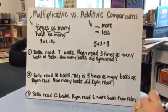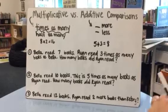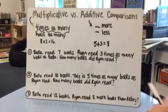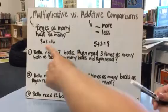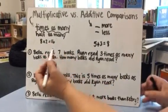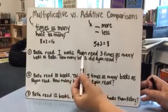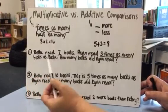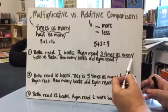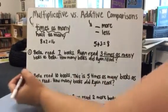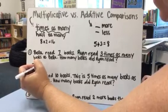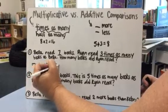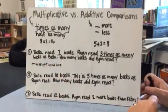Number one: Bella read seven books. Ryan read three times as many books as Bella. How many books did Ryan read? I know that Bella read seven. Ryan read three times as many books as Bella — I notice right away 'times as many,' and I can identify that as a multiplicative comparison because it's asking 'times as many,' so I'll have to think about multiplication here.